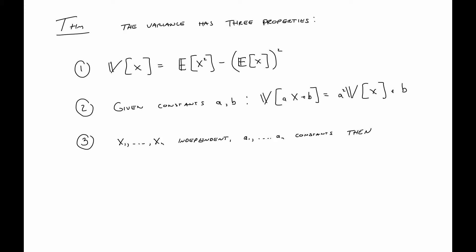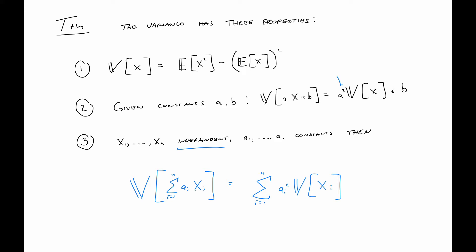A few properties of variance. First, Var(X) = E[X²] − (E[X])², often an easier way to calculate. Second, Var(aX + b) = a² Var(X) — multiplying by a constant stretches the spread, adding a constant just shifts things and doesn't affect spread. Third, for independent X₁ through Xₙ with constants aᵢ, Var(∑aᵢXᵢ) = ∑aᵢ² Var(Xᵢ). Notice we require independence here, unlike linearity of expectation.